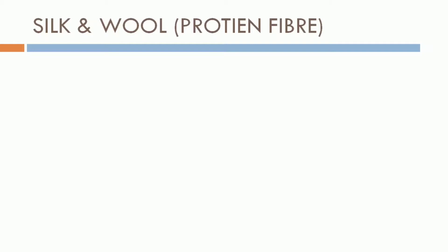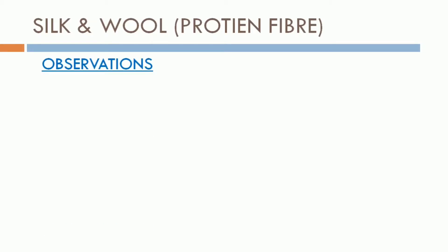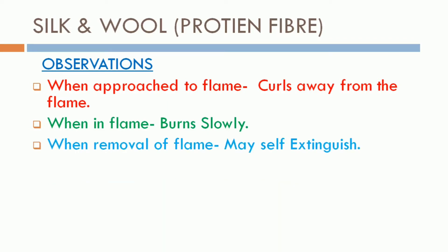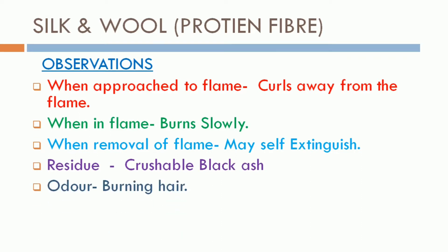Next, protein fibers — that is silk and wool fibers. Observations: when approached to the flame, the fiber curls away from the flame. When in the flame, it burns slowly. When removed from the flame, it may self-extinguish. The residue is a crushable black ash and the odor is just like burning hair.